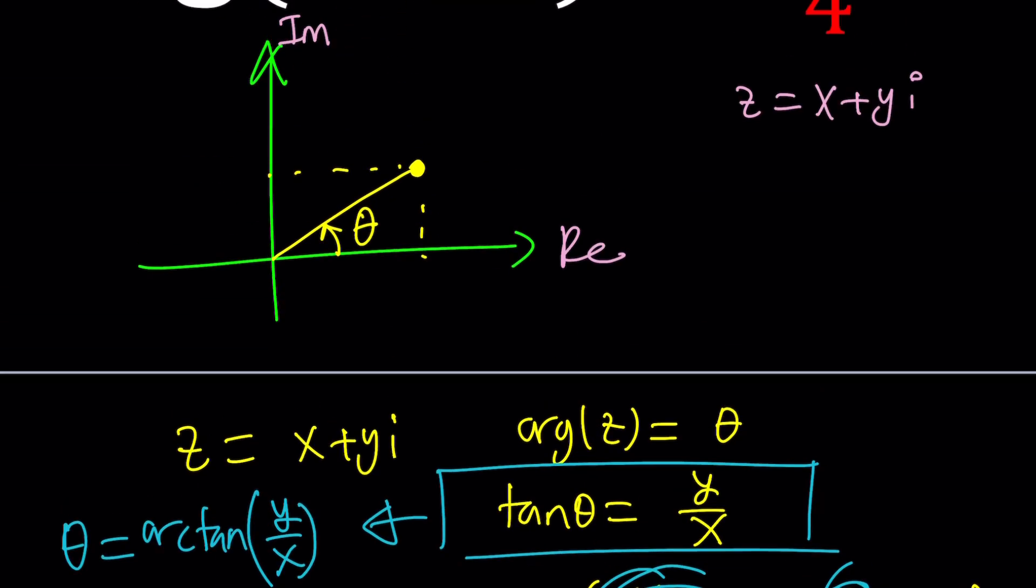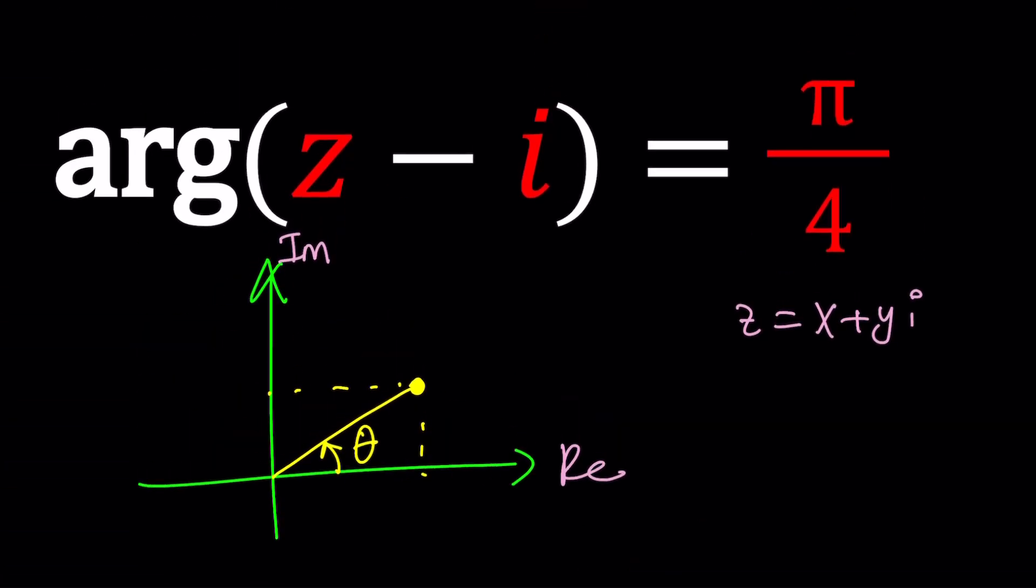Now, how do we use that information? We don't have the argument of z. We have the argument of z minus i. So z was modified. What does this do? Like, when you subtract i from a number, how do you subtract it? It's like adding negative i to it. So you can think of complex numbers as vectors, and take a complex number z.